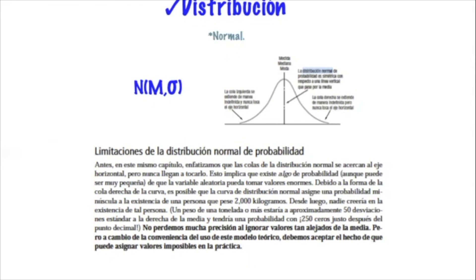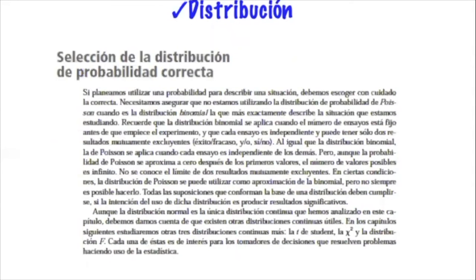Estas son las limitaciones de la distribución normal. Es importante que, si nuestra población o muestra no se caracteriza por tener una distribución normal, entonces tenemos que ver con qué parámetros de otro tipo de distribución vamos a trabajar. Existen criterios para seleccionar qué tipo de distribución utilizar cuando los datos no se ajustan a la distribución normal.